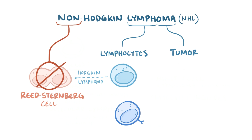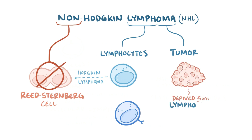So non-Hodgkin lymphoma is a tumor derived from lymphocytes, specifically B cells and T cells, which mainly live in the lymph nodes and move through the blood and lymphatic system.